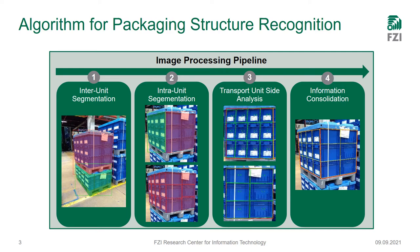In the following step, transport unit face analysis, we take each transport unit side and make a rectified image of the transport unit side, and look at the packages to find the package arrangement and the number of packages within the transport unit side. In the last step of information consolidation, we put these two sides back together and infer the overall arrangement and number of packaging units for the transport unit.